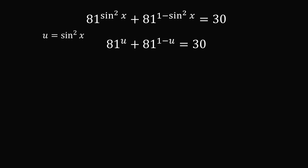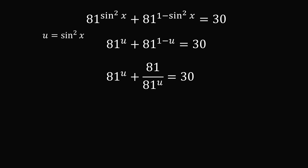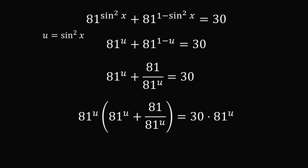Since x is between 0 and 360 degrees, u will be between 0 and 1. So 81 to the power of u will be greater than 0 — but in particular, it will not be equal to 0. You always want to check this so you're not dividing by 0. So we can rewrite this equation as 81 to the power of u plus 81 divided by 81 to the power of u is equal to 30. From here we will multiply both sides of the equation by 81 to the power of u. Again, it's important we check that 81 to the power of u is not equal to 0, otherwise we'd be multiplying both sides of the equation by 0.